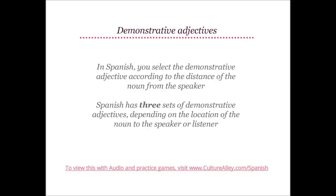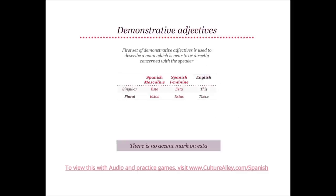In Spanish, you select a demonstrative adjective according to the distance of the noun from the speaker. Spanish has three sets of demonstrative adjectives, depending on the location of the noun to the speaker or listener. The first set is used to describe a noun which is near to or directly concerned with the speaker. In English, we usually use 'this' for referring to nouns or objects which are nearby. The demonstrative adjective 'this' has two forms in Spanish.